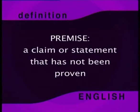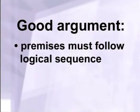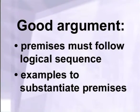Before we look closely at these two arguments, let's just define something. Each of the claims made, both by you and your parents, in this argument can be called premises. A premise is a claim or a statement that has not yet been proven. In order to put forward a good argument, it's a good idea to take the claims — the premises — and construct them into some sort of logical order, as we said before in lesson two. They need to follow logically from one another and build up towards a logical conclusion. And a good argument also has examples and proof to substantiate those premises.